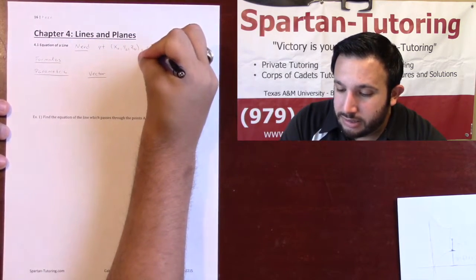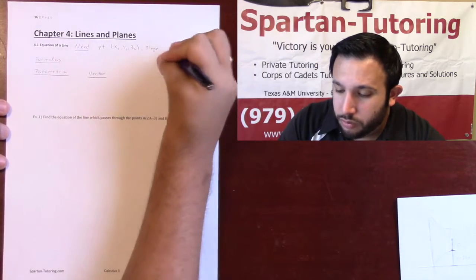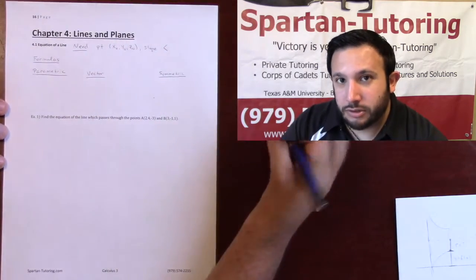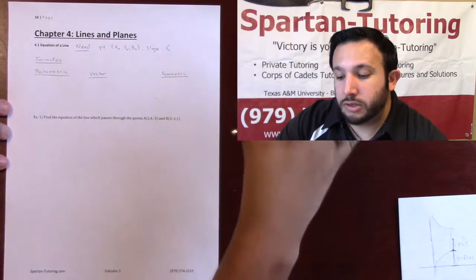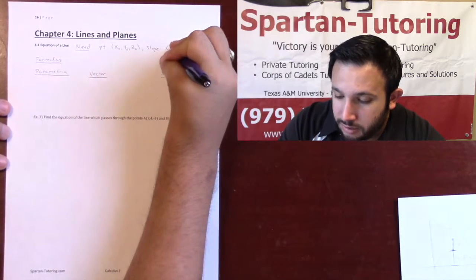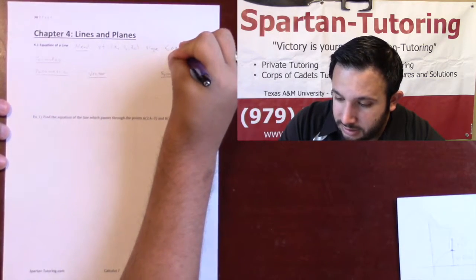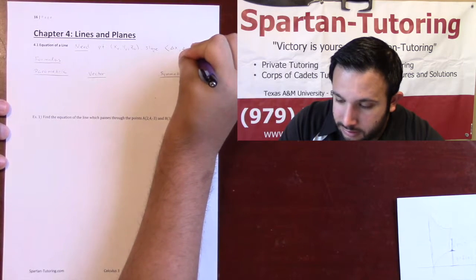and you need a slope, and your slope is going to be a vector. Out in three-dimensional space, your slope is going to be a vector, some delta x, delta y, delta z.